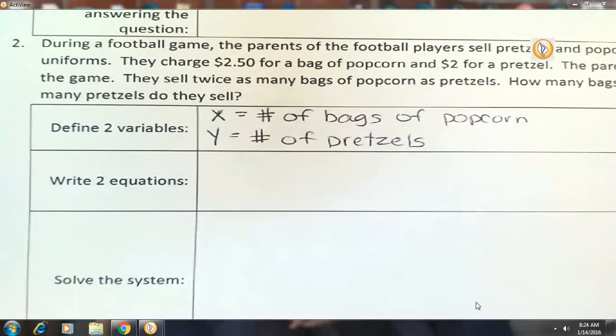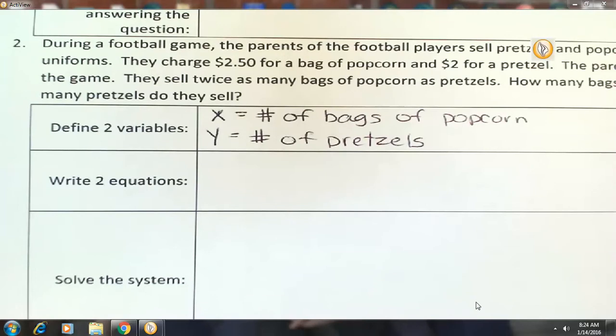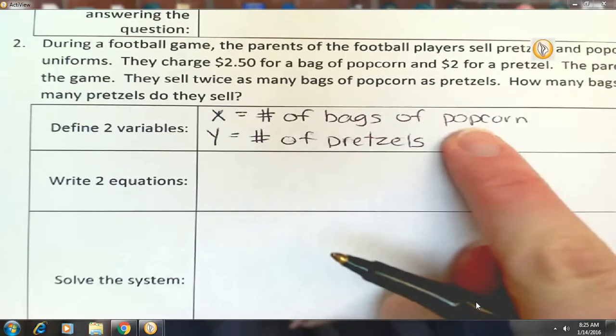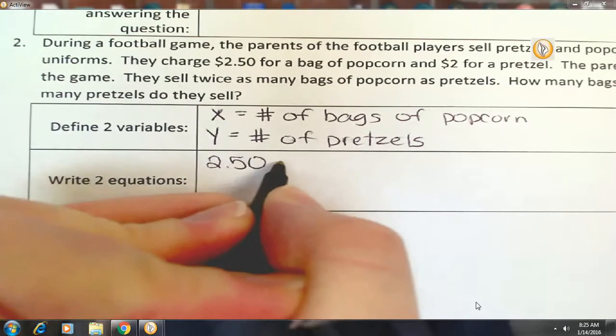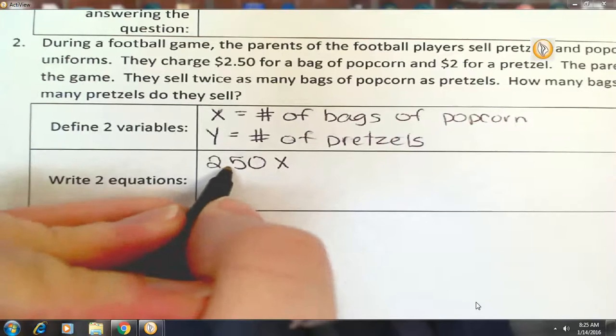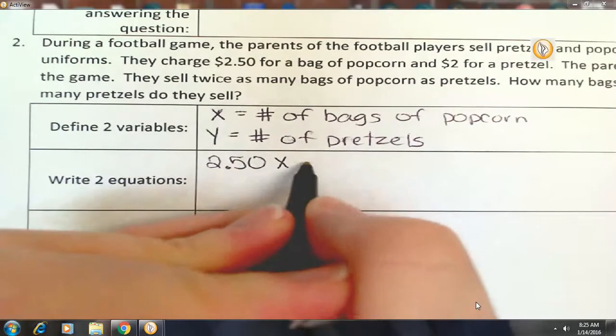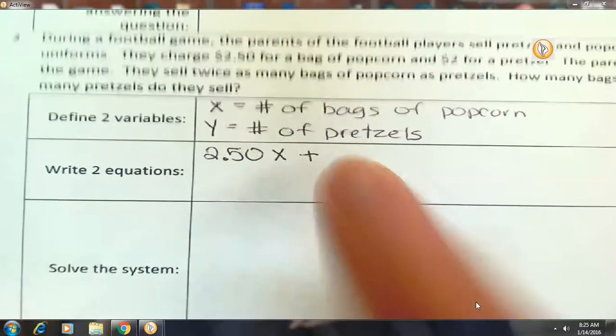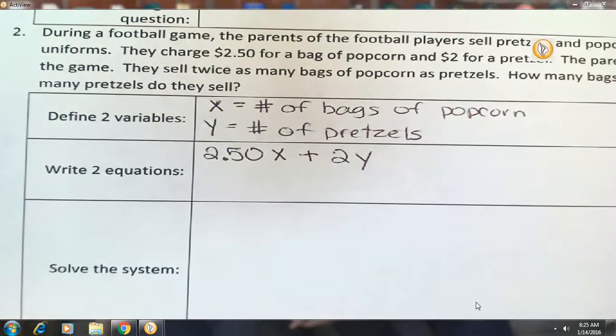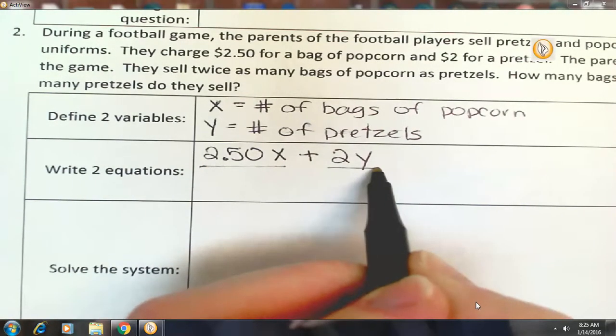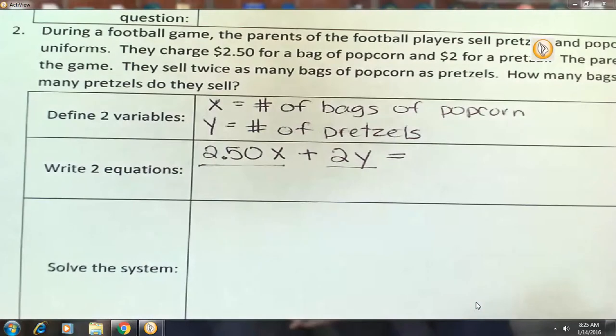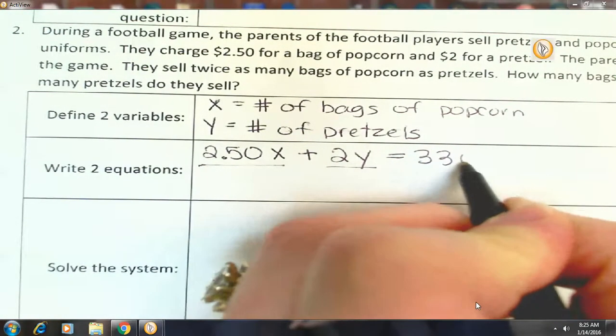All right, so what do we know? We know the price of the popcorn and pretzels, and we know how much money they brought in for the popcorn and pretzels, right? Okay, so let's start with a bag of popcorn. How much does each bag of popcorn cost? $2.50. So $2.50 per bag of popcorn. So $2.50 X. Plus, how much does each pretzel? $2. So $2 times the number of pretzels, Y. So $2.50 X is how much money they're going to bring in in popcorn. $2 Y is how much money they're going to bring in in pretzels. How much total money did they bring in? $336. There's one of our equations.